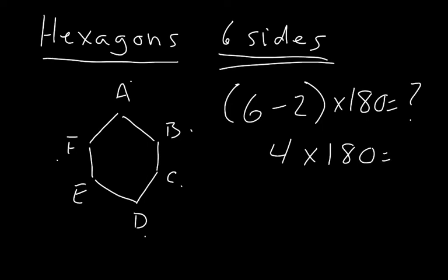This gives us 720 degrees. So that means all of the interior angles—A, B, C, D, E, and F—must add up to give you 720 degrees.